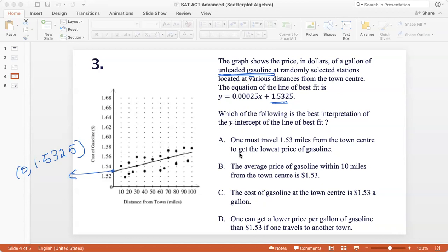One must travel 1.53 miles. That is absolutely not correct because 1.53 is the cost. So this misrepresents the unit. The average price of gasoline within 10 miles. The scatter plot cannot tell you the average price. It can only tell you the price at particular points. So B is out. One can get a lower price per gallon of gasoline if one travels to another town. So this is just beyond the scope of the question. This has no relevance.